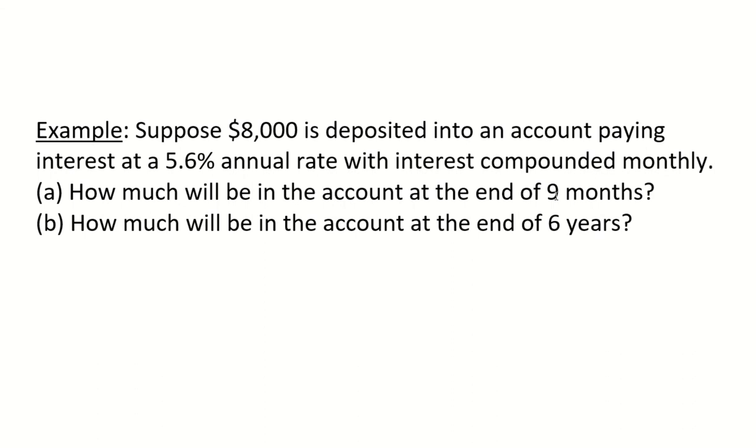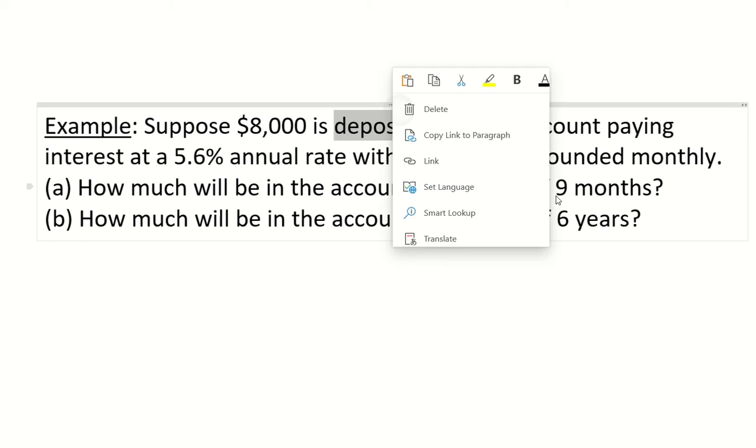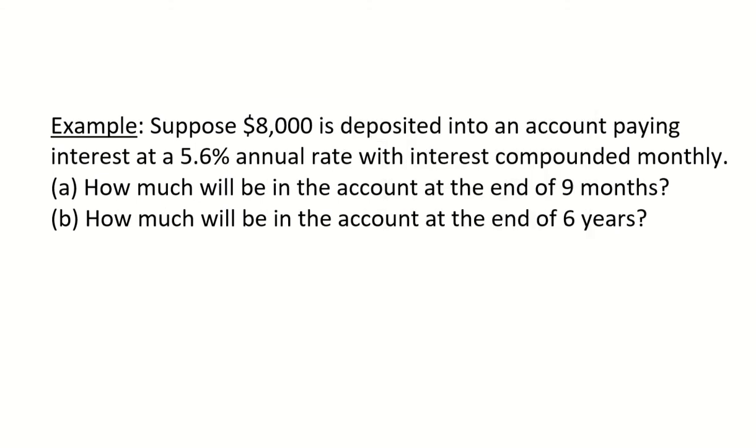First of all, this $8,000 will be the current amount, which is the principal. And this 5.6% annual interest rate will be our R. If you turn it into a decimal, that's 0.056. If your interest is compounded monthly, that means your M will be equal to 12.